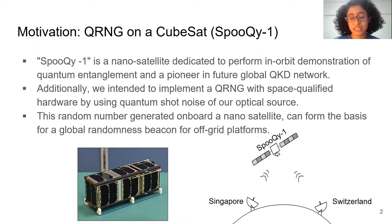We have two ground stations. One is at our University in Singapore and one is at FHNW Institute in Switzerland. We have been generating random numbers on our QRNG and receiving rudimentary beacons at both stations from our satellite. Our QRNG can form the foundation for a globally accessible randomness beacon for off-grid platforms. This is a replica of our satellite which is now in low earth orbit and still operational.